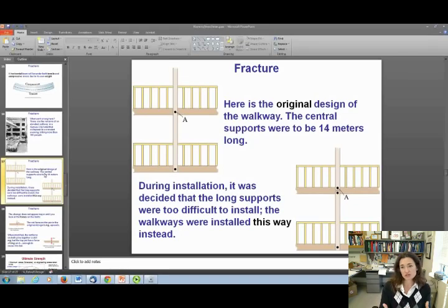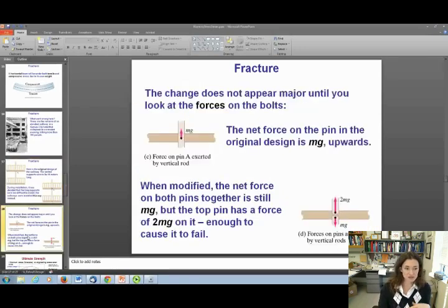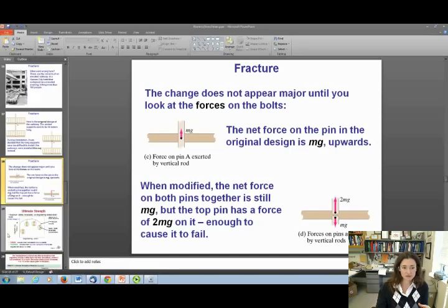If you look at the original design of the walkway, they had it originally designed with one long support. But when they started construction, they decided it was too hard to install one long support, so they broke it into two shorter supports, which wouldn't seem to be too big of a deal. But if you look at what the bolts holding those supports in are supporting under shear stress, the stress was too much and it caused the bolts to shear off and fail. It's really important to understand this kind of physics and engineering because so many lives depend on it every single day.